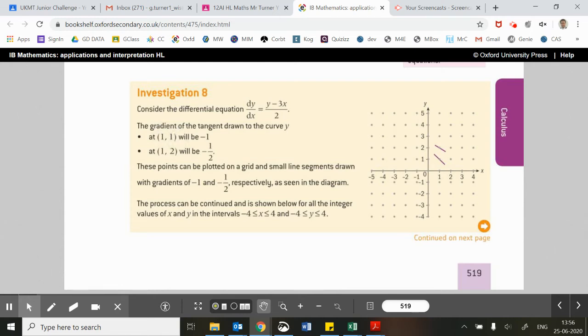So, for example, if I put in 1, 1, put in 1 and 1 here, I get out the answer minus 1. And there we go. We've drawn a gradient of minus 1 there.